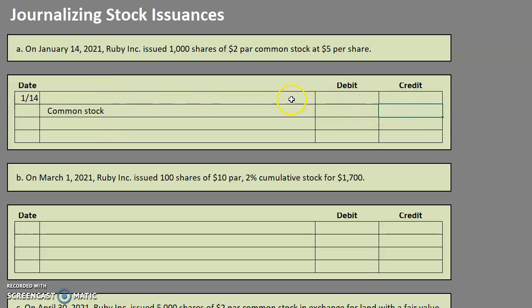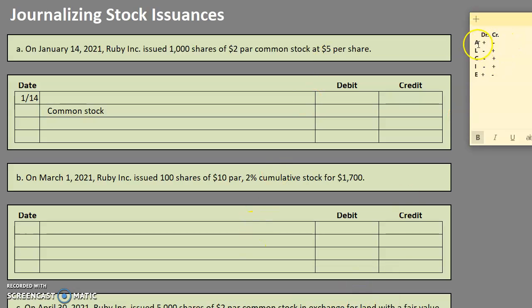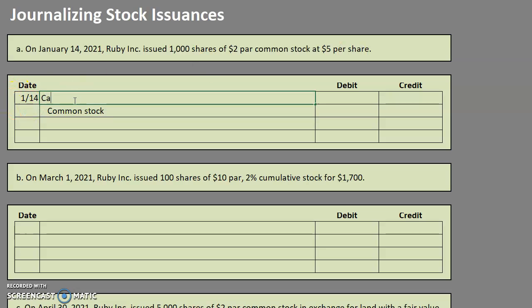Now before we get into amounts, let's continue with accounts. In exchange for this common stock, we are receiving $5 per share, which would be cash. Cash is an asset and it is increasing, so we have to debit cash. Dealing with the amounts: we're issuing 1,000 shares at $5 per share, so the amount of cash we're receiving is $5,000. One of the most important rules for issuing stock is to remember that stock is valued at par. So $2 par times 1,000 shares means we're going to credit common stock for $2,000.